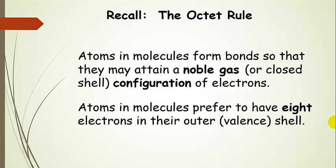One of the things that we talked about was the octet rule. This is the idea that atoms want to have a noble gas configuration of electrons, so they want eight electrons in their outer valence shell.